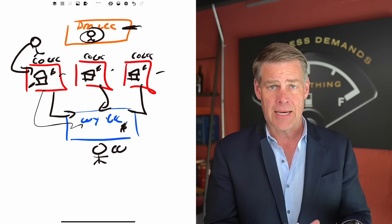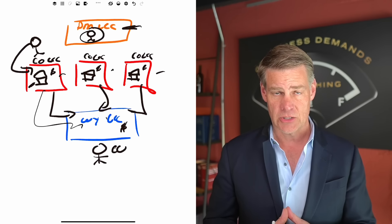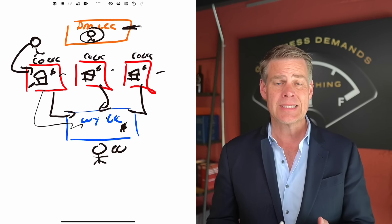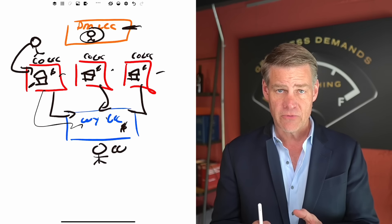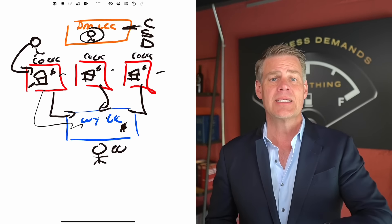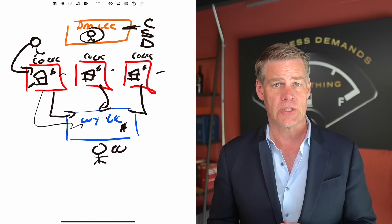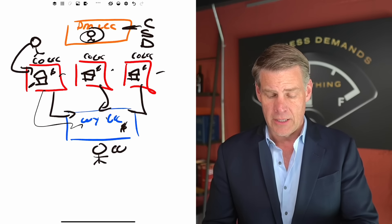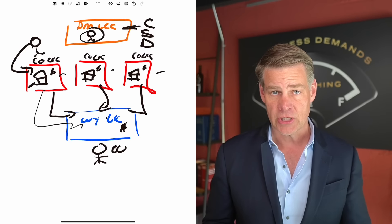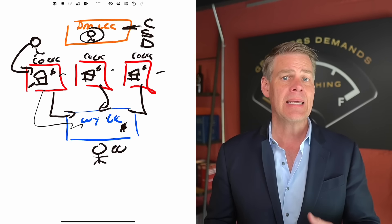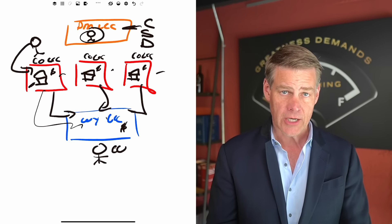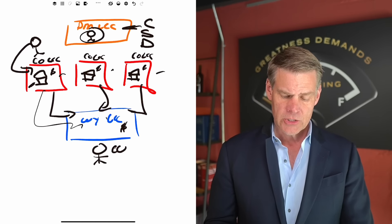Now let's focus on the tax aspects. When you set up the LLC, you have a choice: you can set it up as a C-corp, an S-corp, or as a disregarded entity for federal tax purposes, which means it doesn't have to file a tax return. Making the right tax election is really important, because it could mean added expenses on an annual basis to maintain that property management structure.